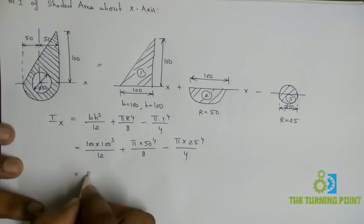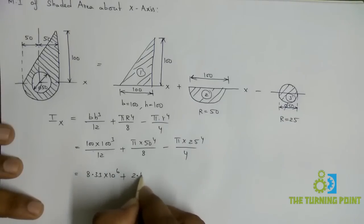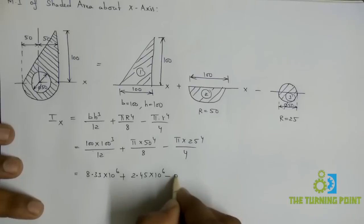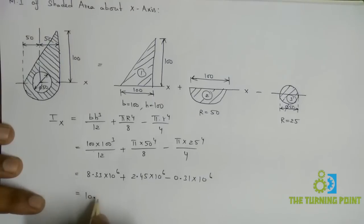When you calculate it you will get 8.33 × 10⁶ plus 2.45 × 10⁶ minus 0.31 × 10⁶. That equals 10.47 × 10⁶.